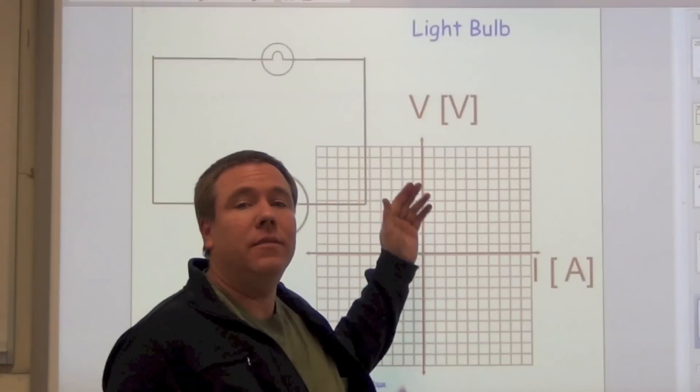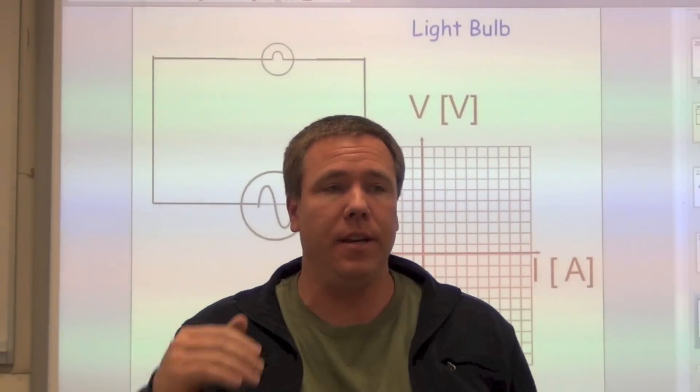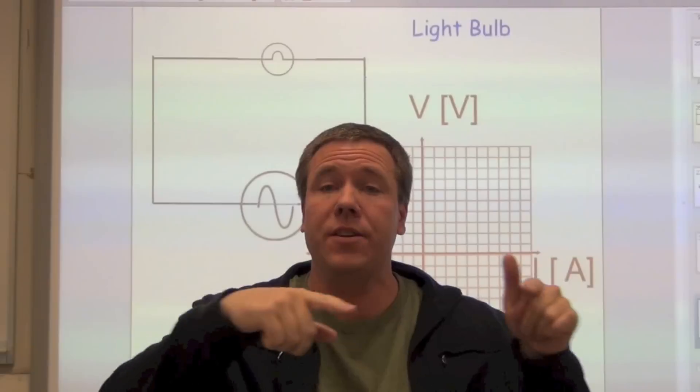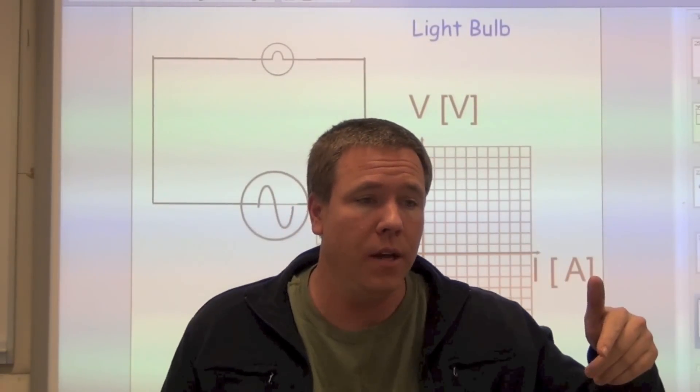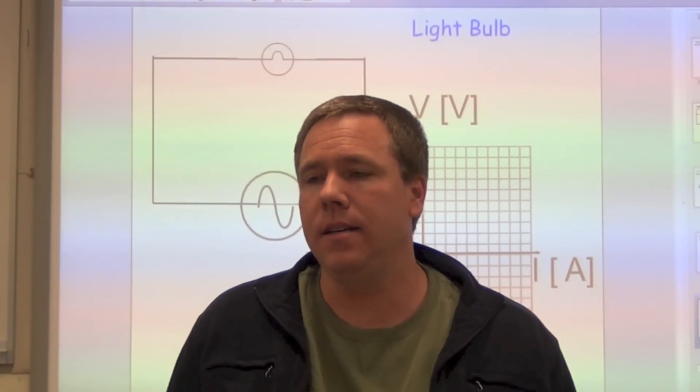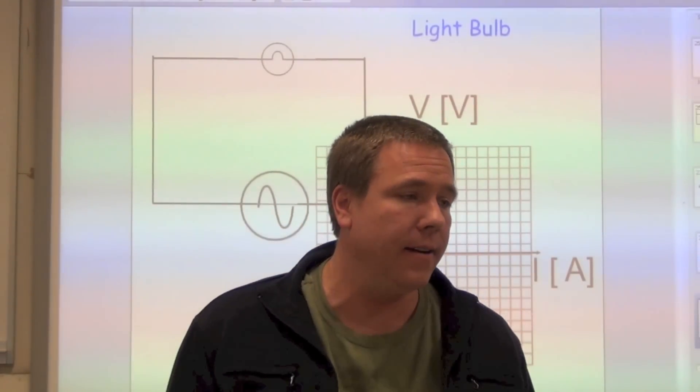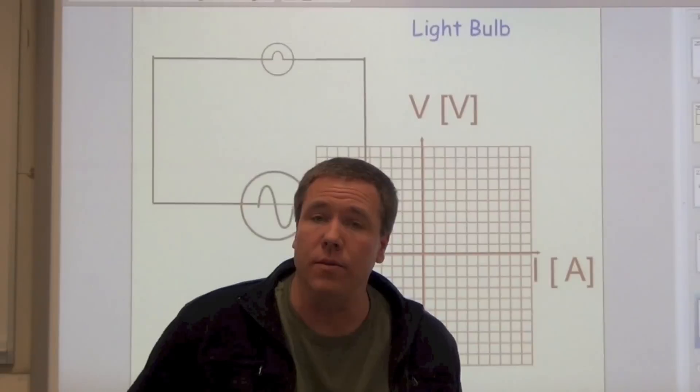We're going to go back to voltage versus current for the light bulb. Remember for the diode, we did current versus voltage to emphasize the voltage threshold required to have current flow. But with the light bulb, it's some sort of filament inside there that emits photons whenever there's current going through the light bulb.